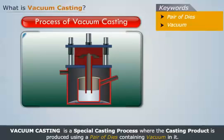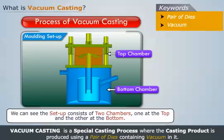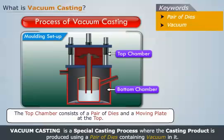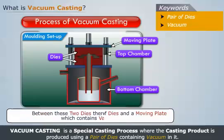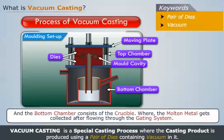Consider the setup as shown. We can see that the setup consists of two chambers, one at the top and the other at the bottom. The top chamber consists of a pair of dies and a moving plate at the top. Between these two dies there is a mold cavity which contains vacuum, and the bottom chamber consists of the crucible where the molten metal gets collected after flowing through the gating system.